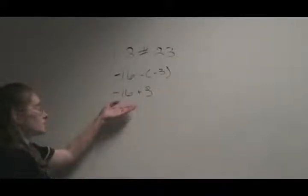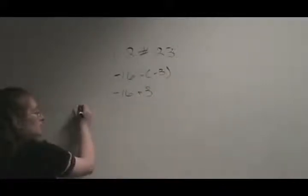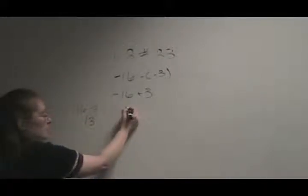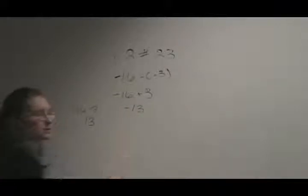Now here, you could rewrite this if you wanted to be 16 minus 3. You can see then you have 13, but since the larger number is negative, the answer is negative 13.